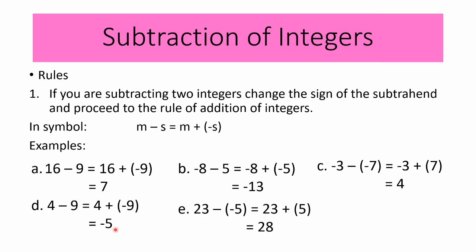For our last subtraction example, we have 23 minus negative 5. Copy the minuend, which is 23, change the minus sign to a plus sign, and get the opposite of negative 5, which is positive 5. So 23 plus 5 is equal to 28. Therefore, 23 minus negative 5 is equal to 28.